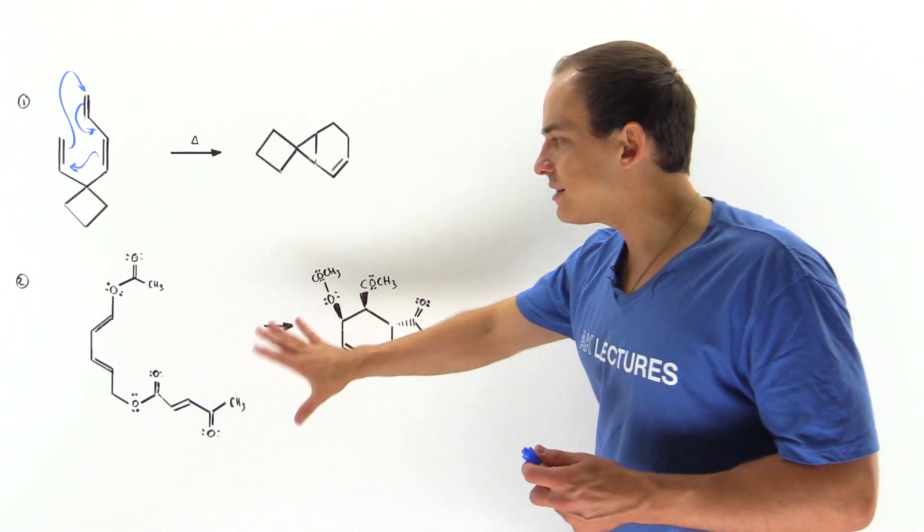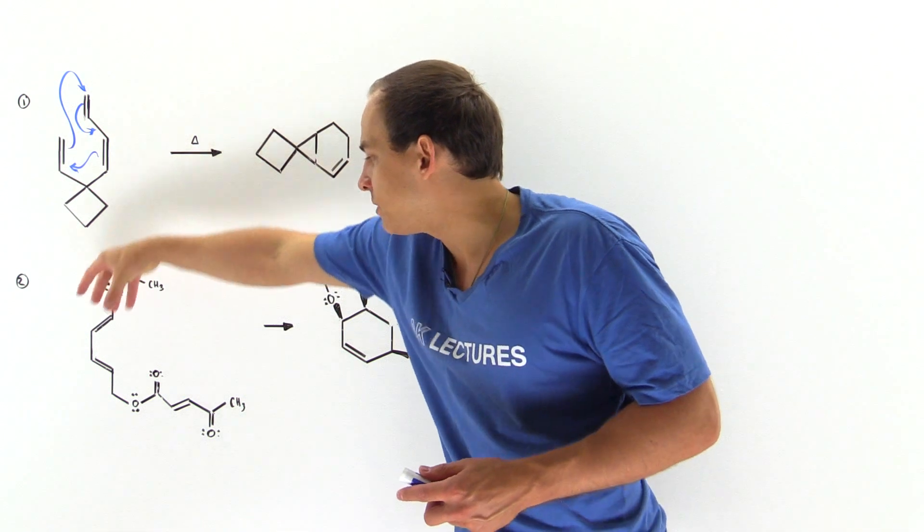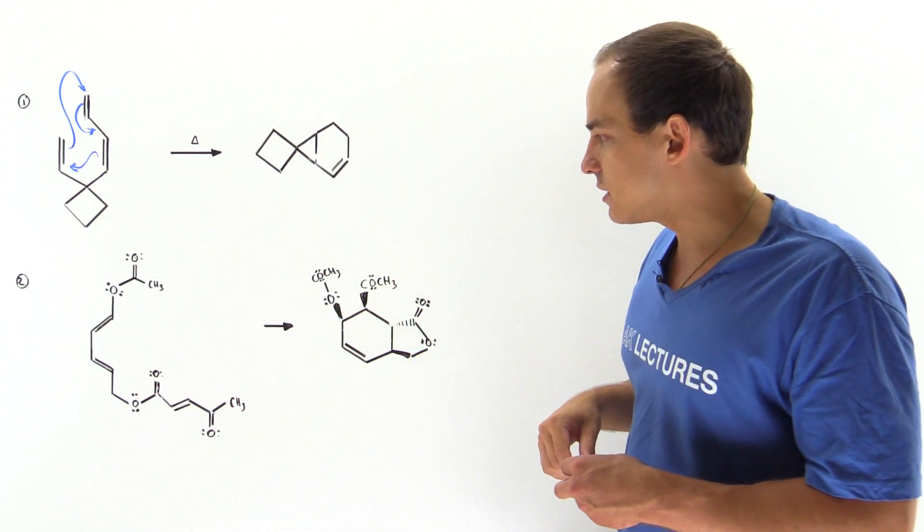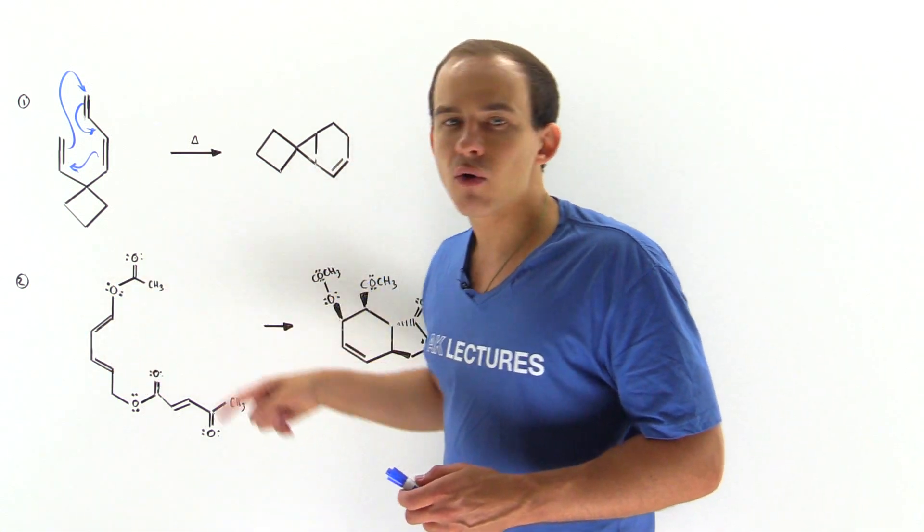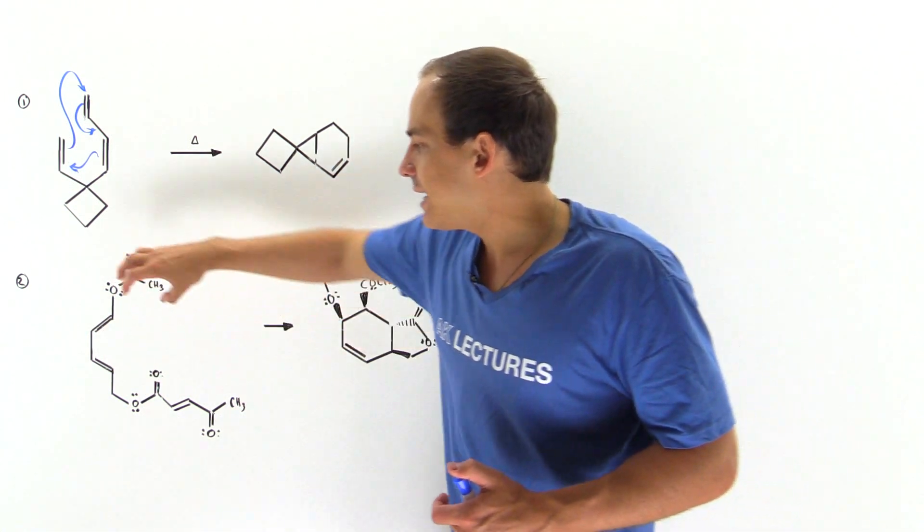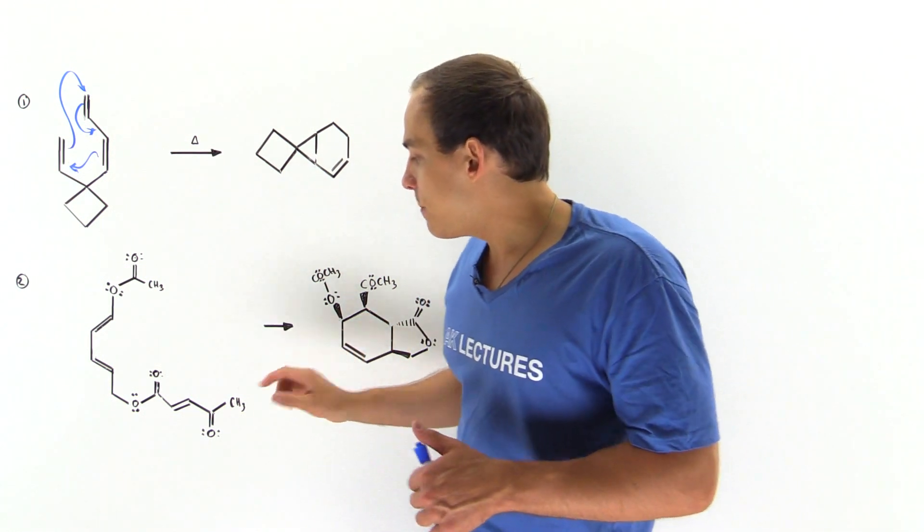This is slightly more difficult to see as a result of the complexity of this molecule. But we can see that this is our 1,3-diene and it is in the cis formation.